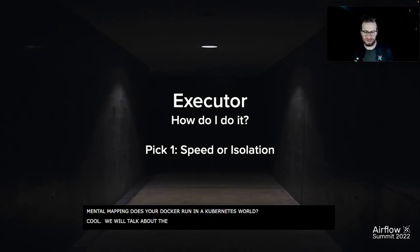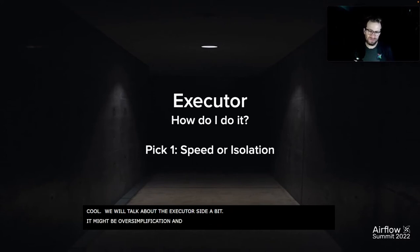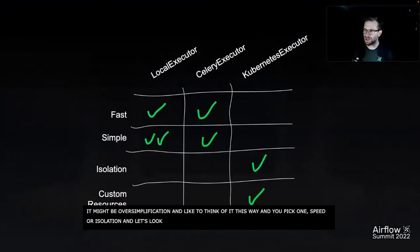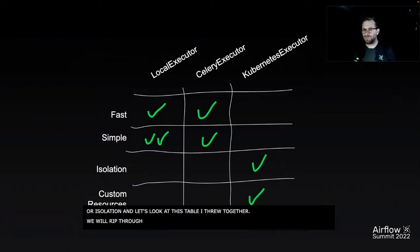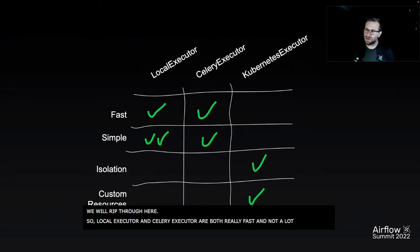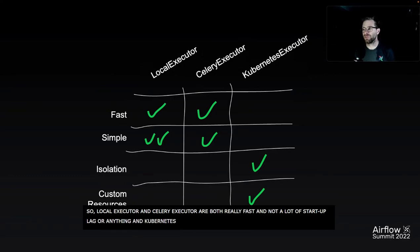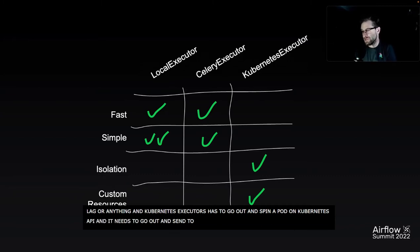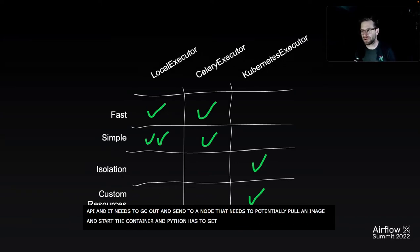Let's talk about the executor side. It may be an oversimplification, but I like to think of it this way: you pick one — speed or isolation. Let's look at this little table. Local executor and Celery executor are both really fast; there's not a lot of startup lag. Whereas Kubernetes executor has to go out and spin up a pod on the Kubernetes API, assign it to a node, potentially pull an image, start the container, and get Python started. It's not a huge amount of time, but it's noticeable, and when you have a lot of tasks it can add up.